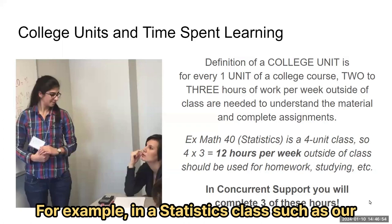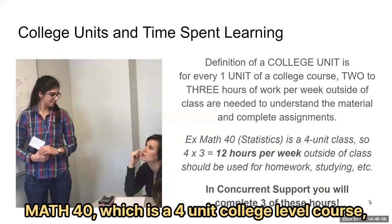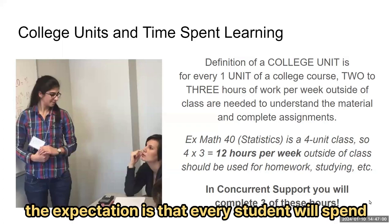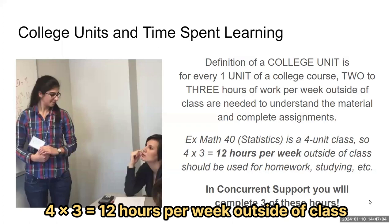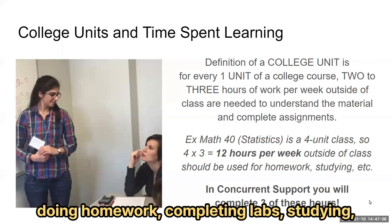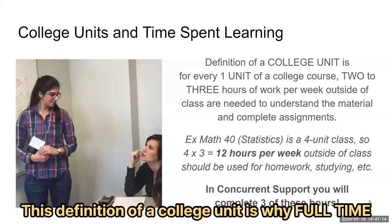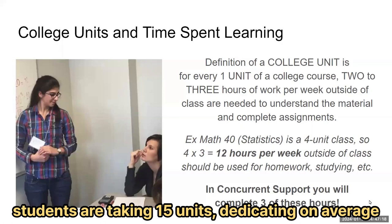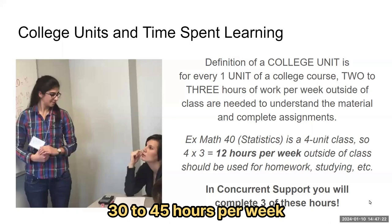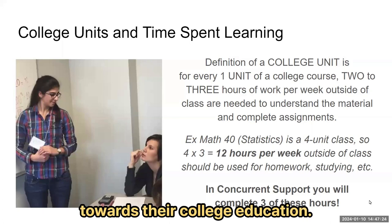For example, in a statistics class such as our Math 40, which is a four-unit college-level course, the expectation is that every student will spend four times three — which equals 12 hours per week — outside of class doing homework, completing labs, studying, preparing for assignments, etc. This definition of a college unit is why full-time students taking 15 units are dedicating on average 30 to 45 hours per week towards their college education.